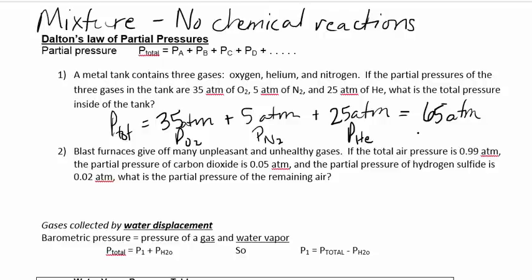Add it all together and you get a total pressure of 65 atmospheres. Told you it was hard. Another way we can present this is using percentages. If 75% comes from oxygen, you just find what 75% is. So if it was 1 atmosphere, 0.75 atmospheres would come from oxygen.